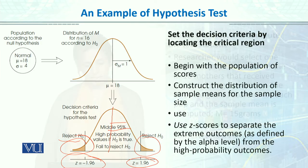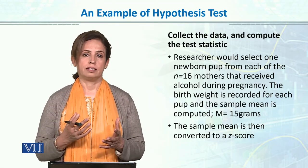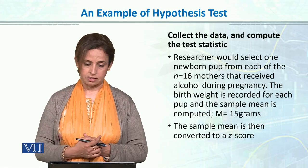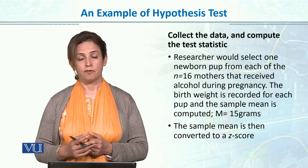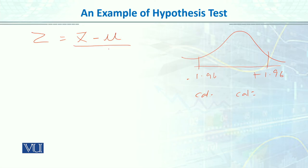The third step is to collect the data and compute the test statistic. We have already collected the sample — N=16, where alcohol was given to each mother rat and the birth weight was calculated, giving us a sample mean of 15 grams. Our table value is 1.96. Now we calculate the Z score. The formula is: Z equals sample mean minus population mean, divided by sigma over the square root of N. Substituting values: sample mean is 15, population mean is 18, and sigma is 4.